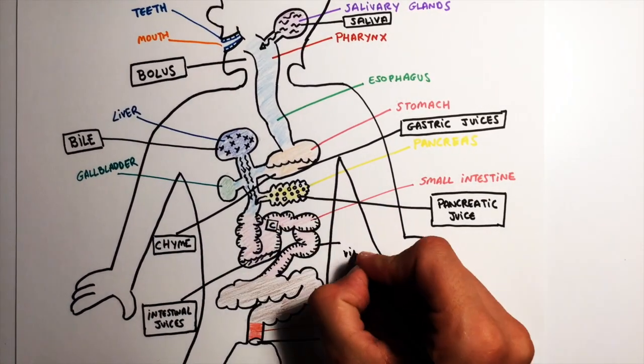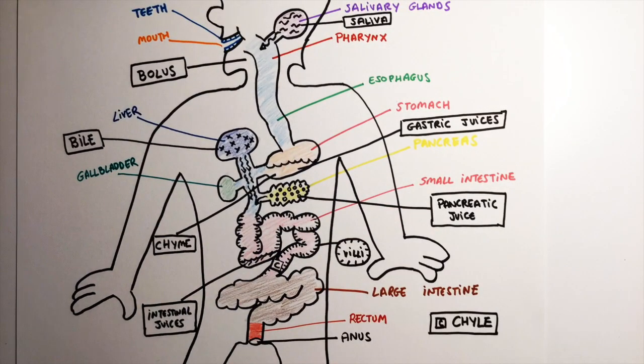Chyle travels through the small intestine, where nutrients are absorbed into the blood. The inside of the small intestine is covered with tiny finger-like projections called villi, which help to absorb the nutrients.